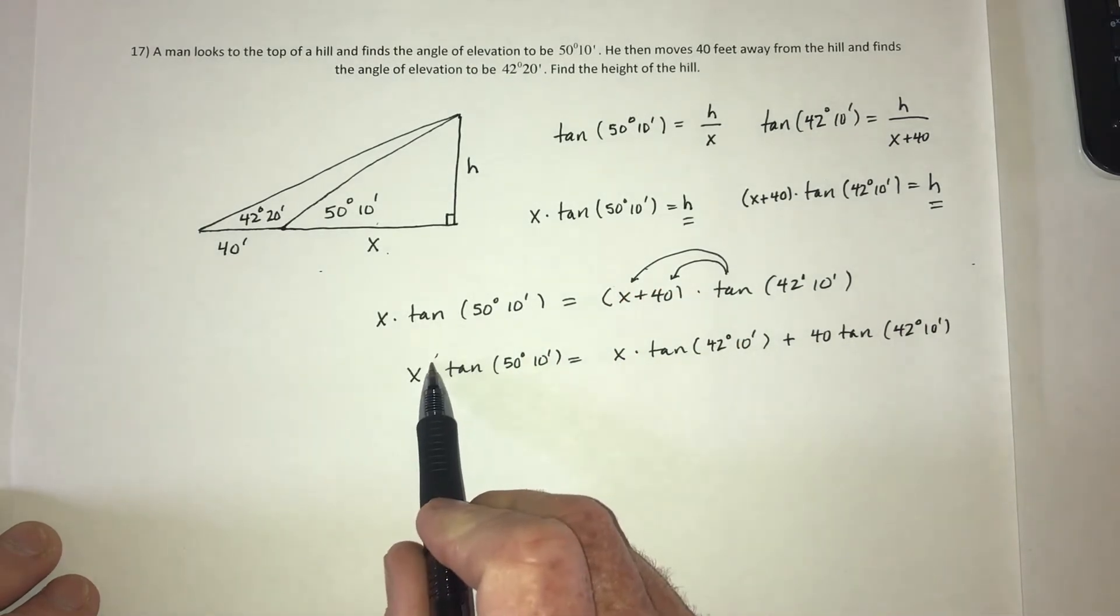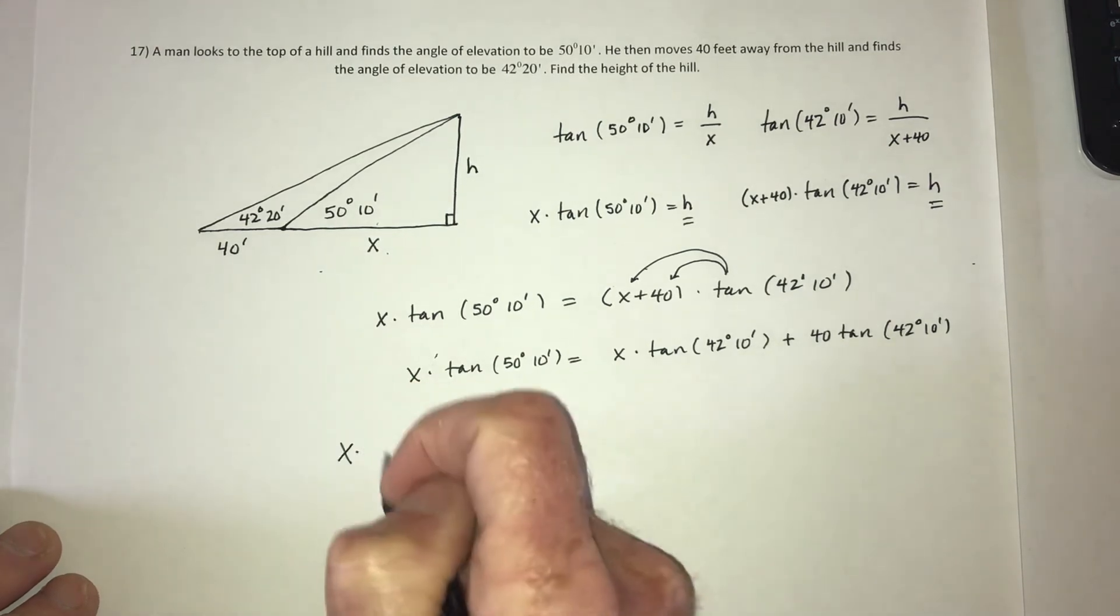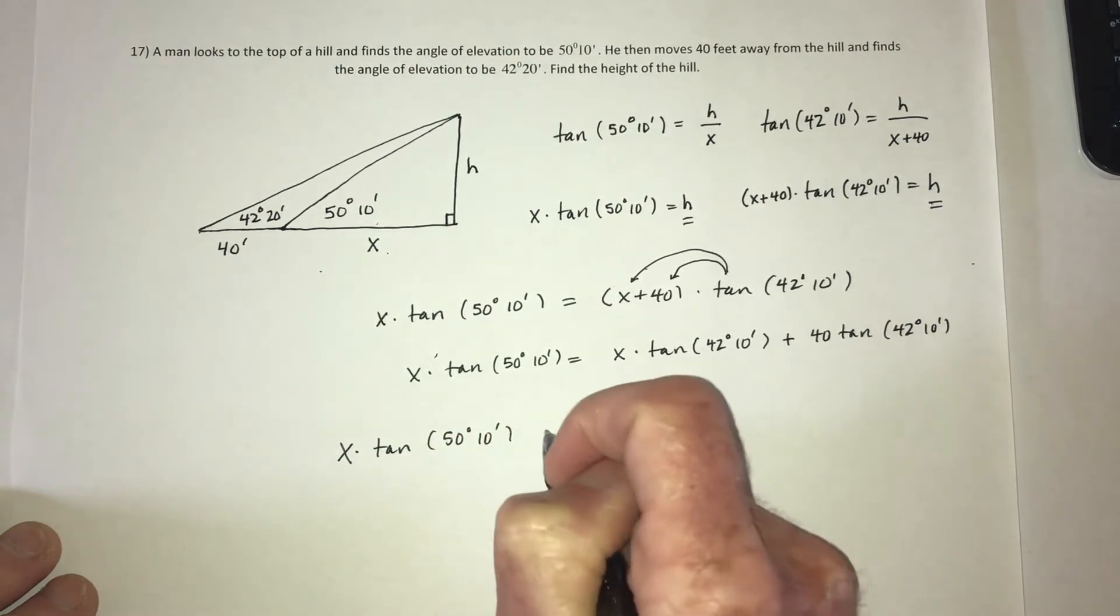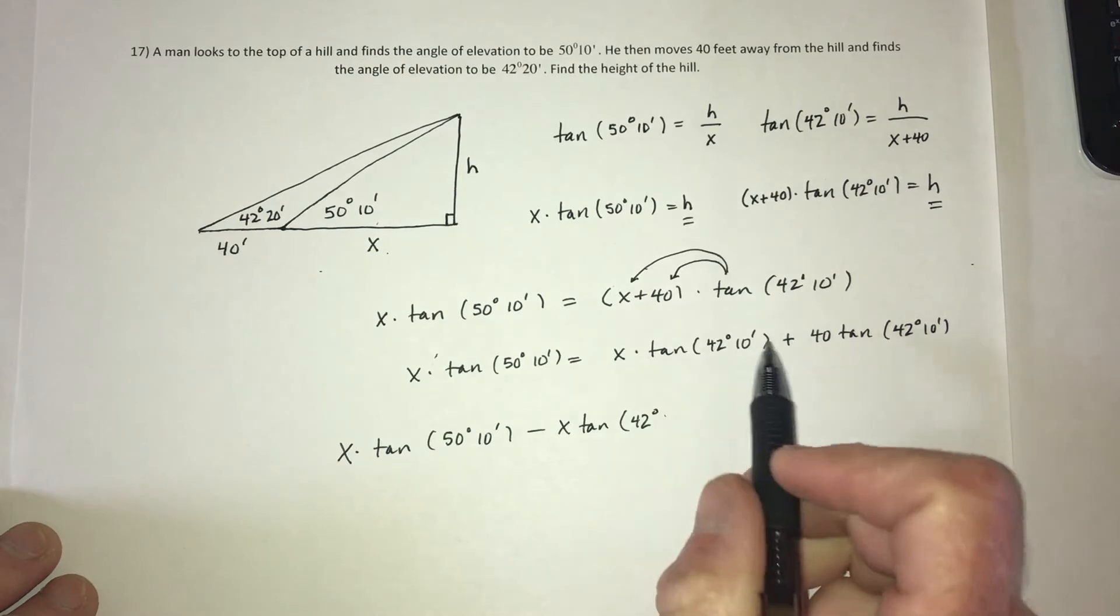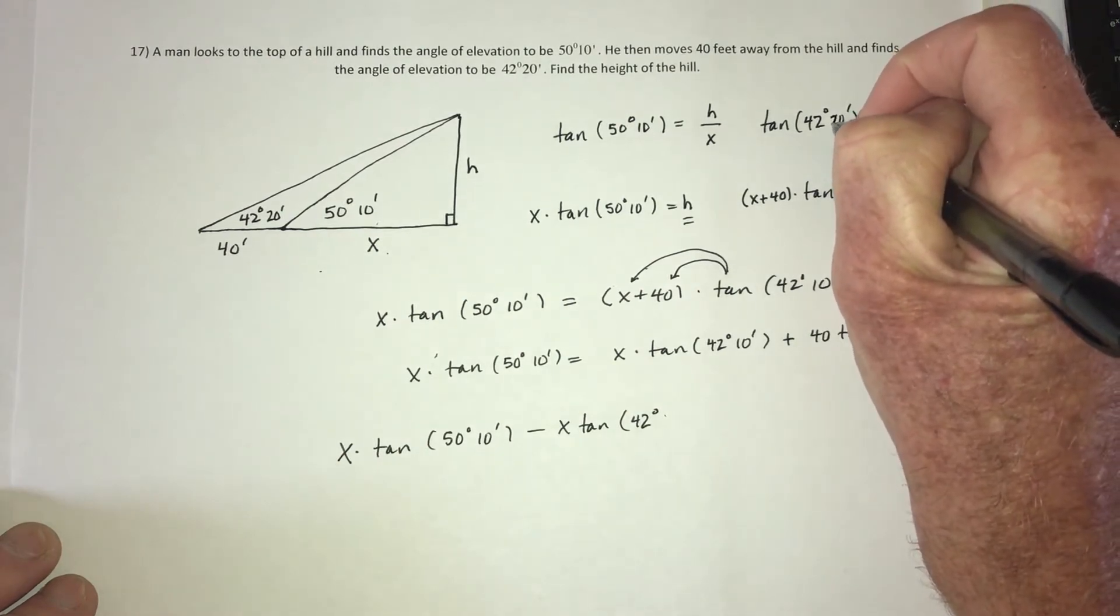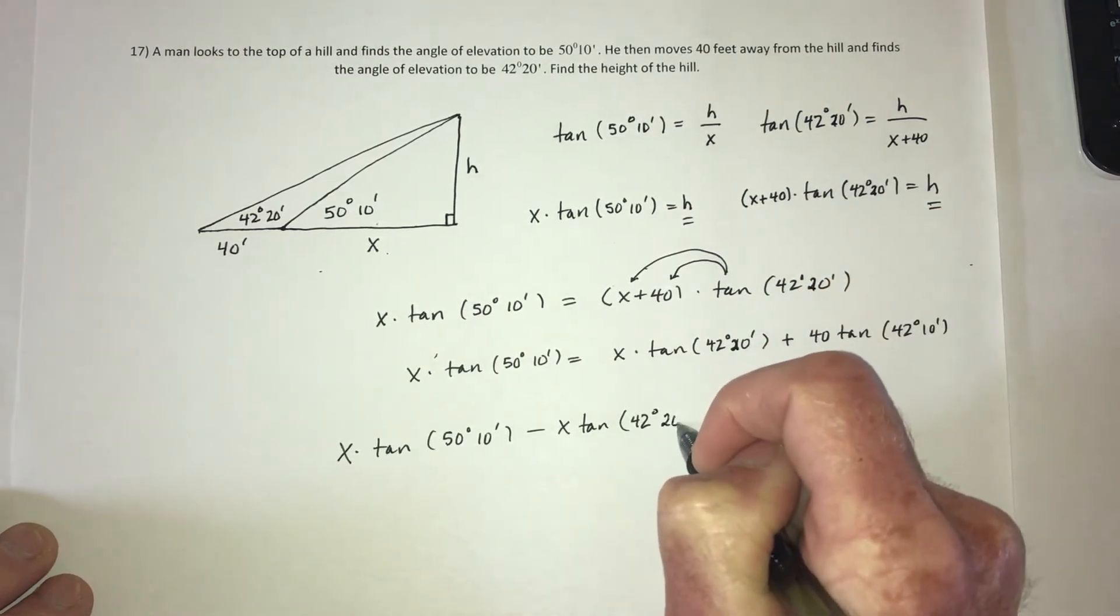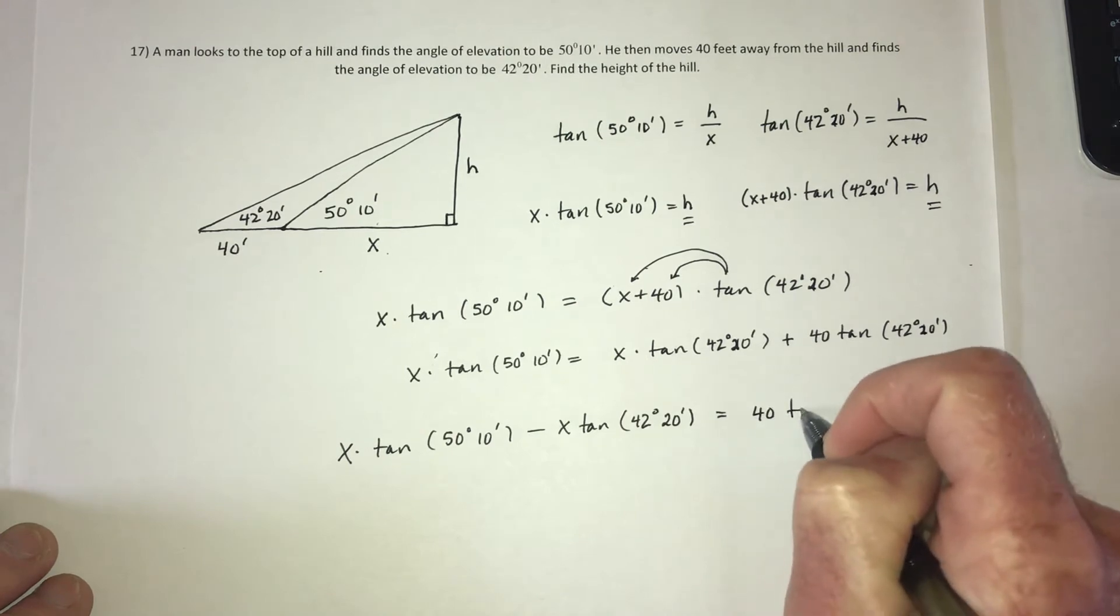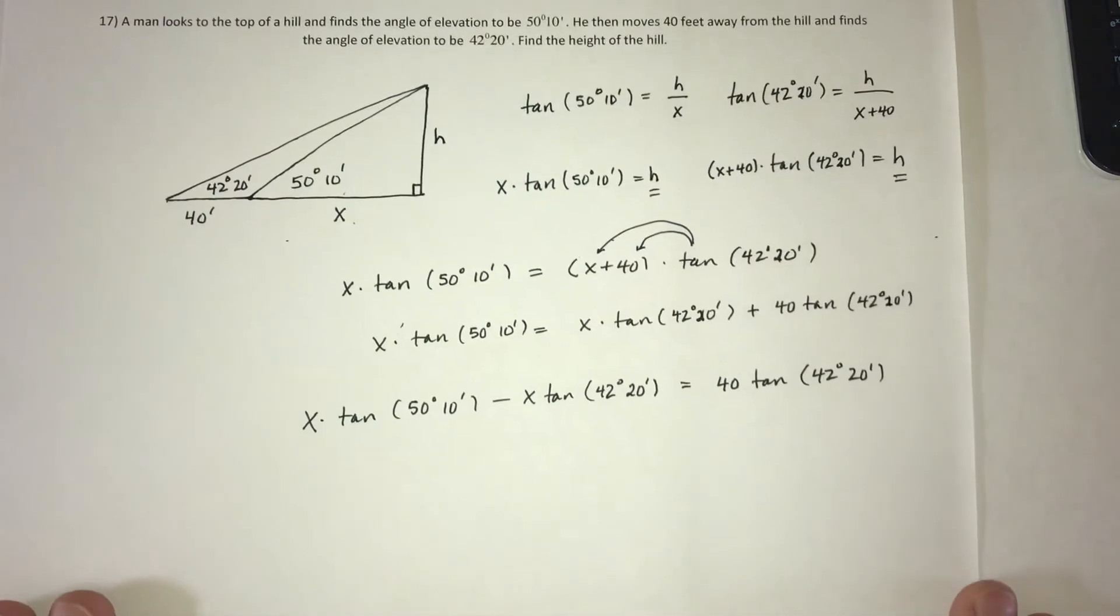Okay, now this has an x and this has an x, so I'm going to put them on the same side. I'm going to take this one and subtract it to move it to the left side. So the left side will have the original x tangent of 50 and 10 minus x times tangent of 42. You know what? That was supposed to be 42 and 20 the whole time. Why didn't anybody tell me? Okay, that's all right. I fixed it. It's supposed to be 20, 42 and 20. And this one too. So 40 tangent, 42, 20.